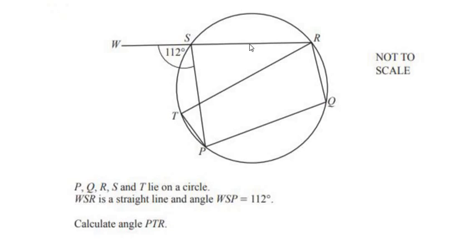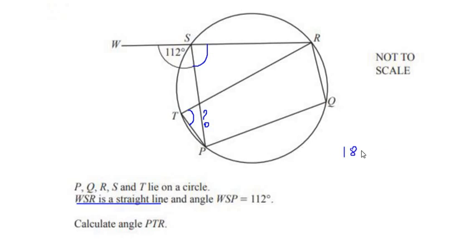WSR is a straight line and we are asked to find angle PTR — that is the angle we need to find. Let us start with WSR, which is mentioned as a straight line. As we know, a straight line makes a total angle of 180 degrees when it is cut by another line, so we can find this part of the angle at S because the total angle becomes 180 degrees.